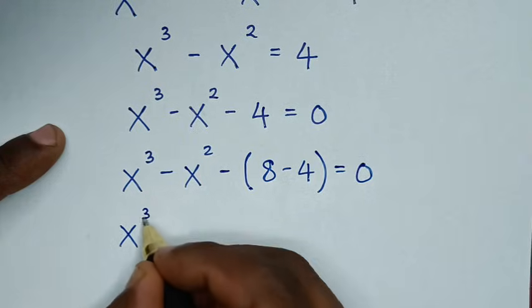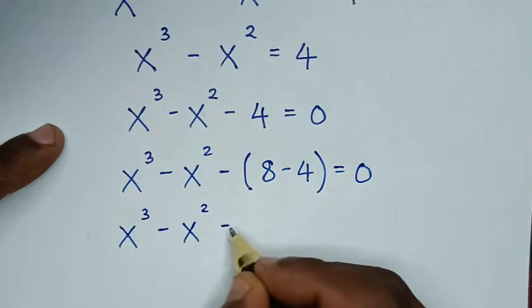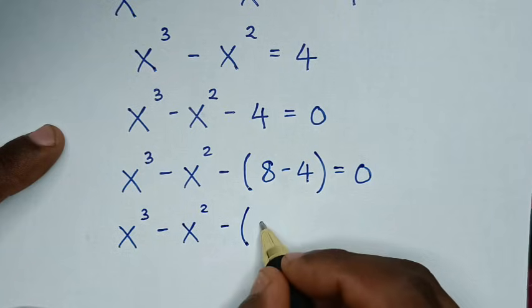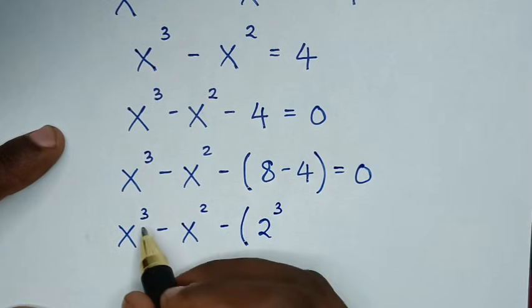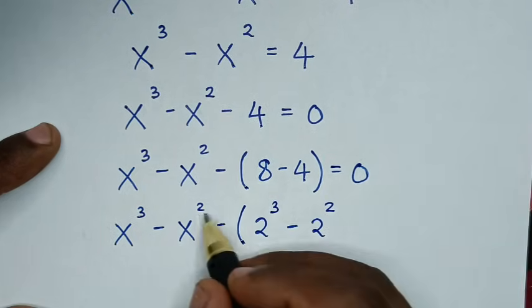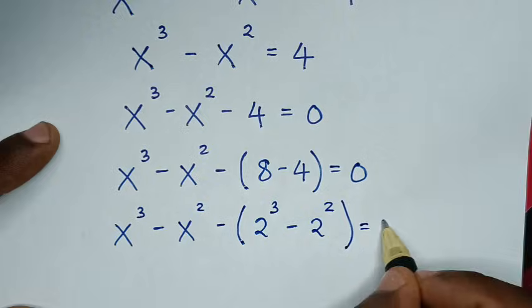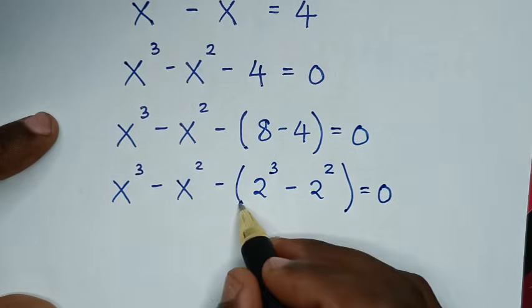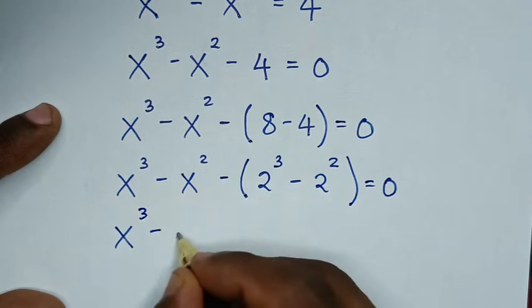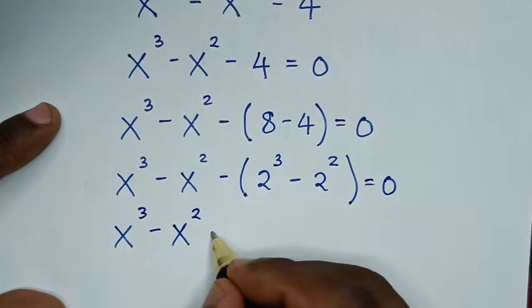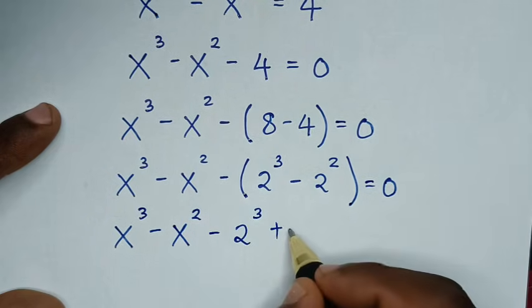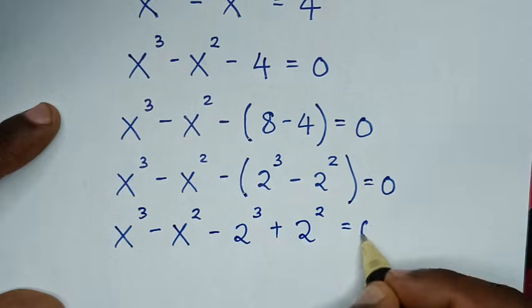Rewriting: x cubed minus x squared, minus bracket 8 minus 4 bracket, equals 0. Here, 8 is the same as 2 to the power of 3, and 4 is the same as 2 to the power of 2. Opening the brackets with the negative sign: x cubed minus x squared minus 2 cubed plus 2 squared equals 0.